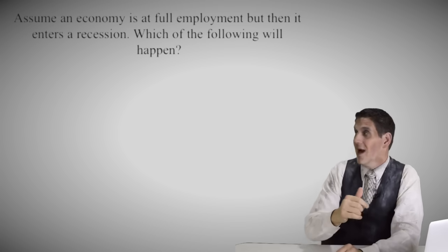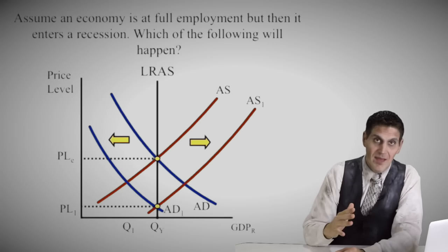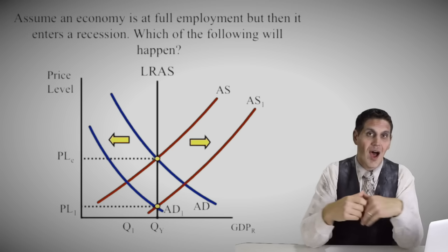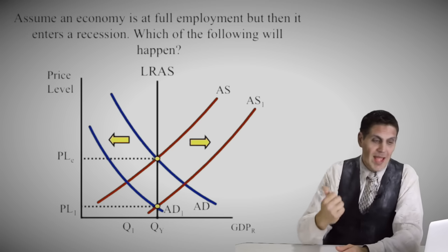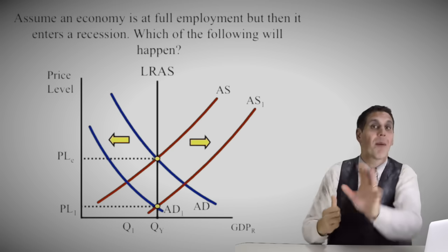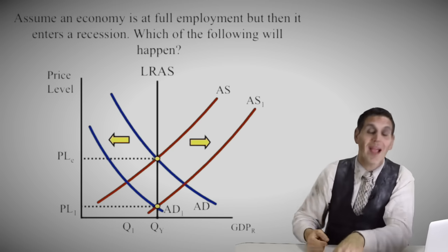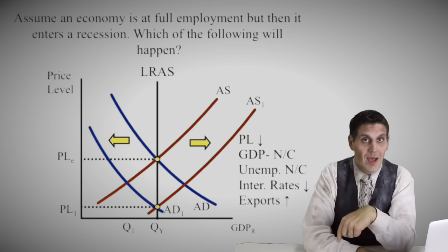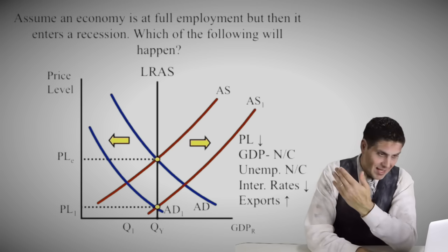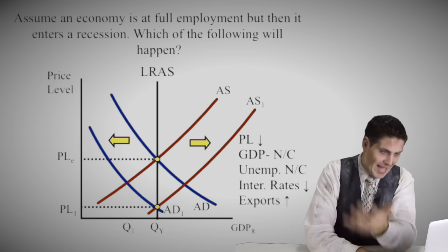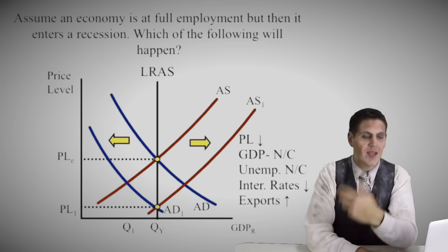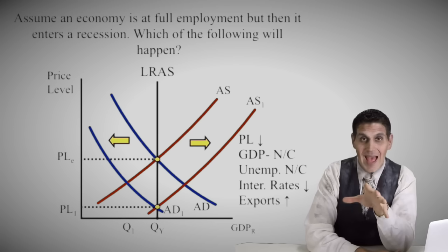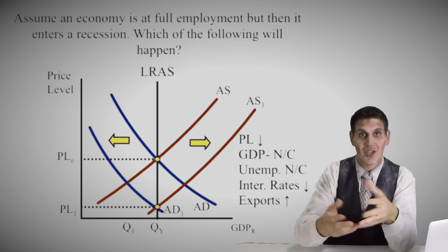What if instead of the short run, we were talking about the long run? What if aggregate demand shifted to the left, and then — assuming wages and prices of resources are flexible — aggregate supply shifts to the right, putting us back in the long run. If you don't know what I'm doing here, go back and watch some other videos, because this is a review. The right answer here would be price level would go down, but output or GDP wouldn't change — it would stay exactly the same, back at full employment. Unemployment would be exactly the same, interest rates would fall, and exports would go up.